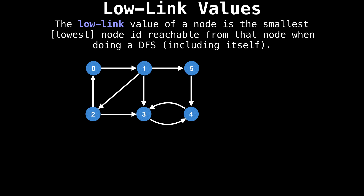For example, the low link value of node one should be zero, since node zero is reachable from node one via some series of edges. Similarly, node four's low link value should be three, since node three is the lowest node that is reachable from node four. So if we assign all the low link values, we get the following setup.